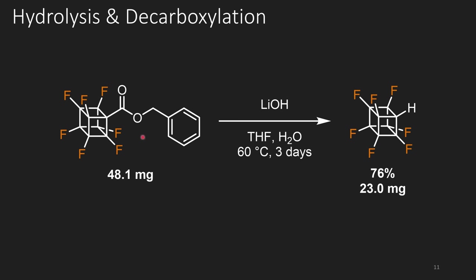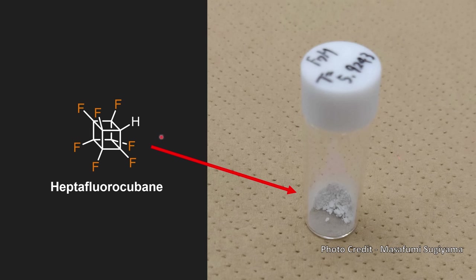Once they had the benzyl ester, they hydrolyzed it under mild conditions using lithium hydroxide at 60 degrees Celsius for three days, giving a 76% yield and 23 milligrams of heptafluorocubane. We actually have a picture of what heptafluorocubane looks like — you can see it's a white powder. It isn't crystalline, so you can't quite see any cube shapes, but it's really cool to see.